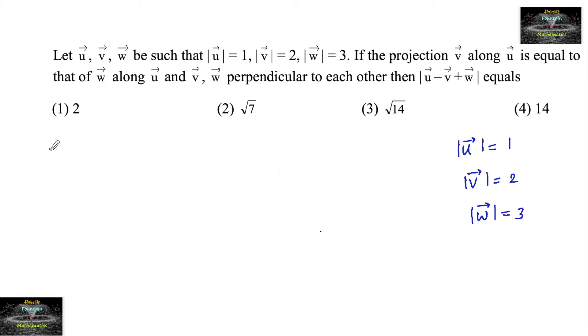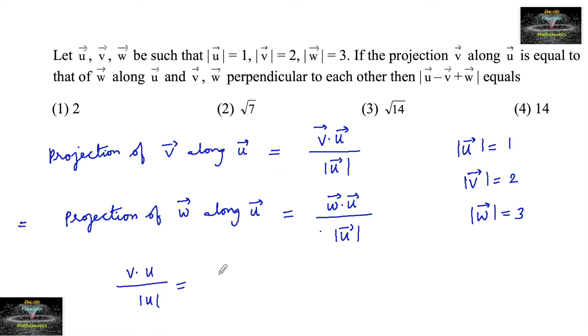The projection of v along u can be written as v dot u divided by mod u, which is equal to the projection of vector w along u, which equals w dot u divided by mod u. So v dot u divided by mod u equals w dot u divided by mod u, which implies v dot u is equal to w dot u. Make this equation one.